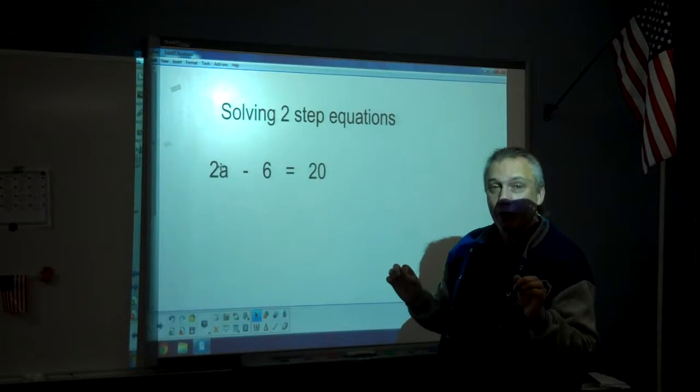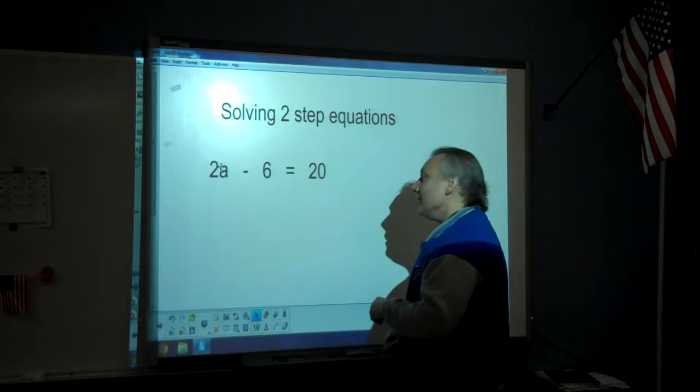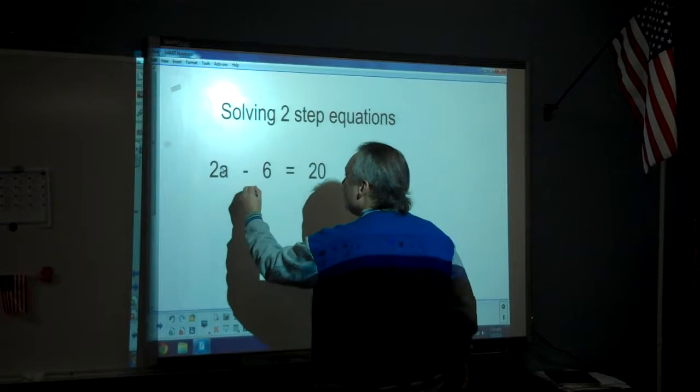You always have to get rid of them from furthest away physically from the letter to closest. So hopefully you can see that the six is further away from the a than the two is. That means we get rid of the six first.